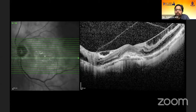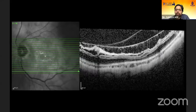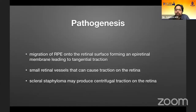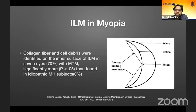We can see macular schisis with splitting of the inner layer into thin strips. Various theories have been proposed, but the main factors are traction from the taut internal limiting membrane, from the blood vessels, the taut short retina, and also the elongated sclera not conforming to the retina's curvature. All these have been proposed as the causes for this traction maculopathy.